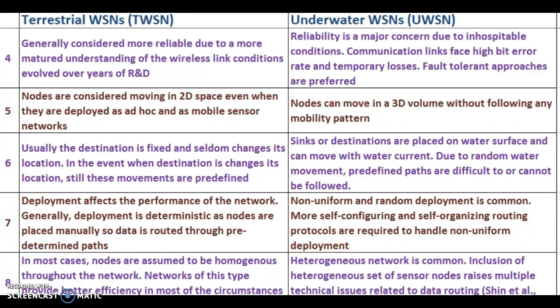Point 4: In TWSN, networks are generally considered more reliable due to a more mature understanding of wireless link conditions. In UWSN, reliability is a major concern due to inhospitable conditions. Communication links face high bit error rates and temporary losses, so fault tolerant approaches are preferred. Point 5: In TWSN, nodes are considered moving in 2D space, even when deployed as ad hoc and mobile sensor networks. In UWSN, nodes can move in a 3D volume without following any mobility pattern.